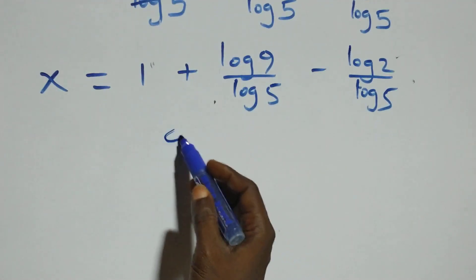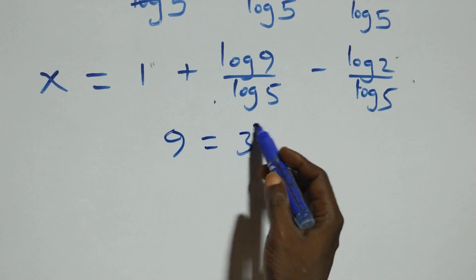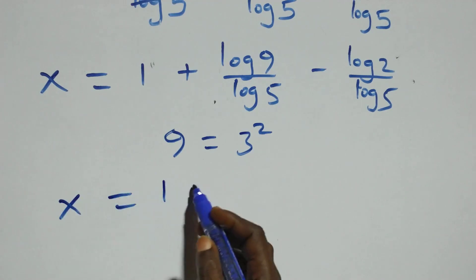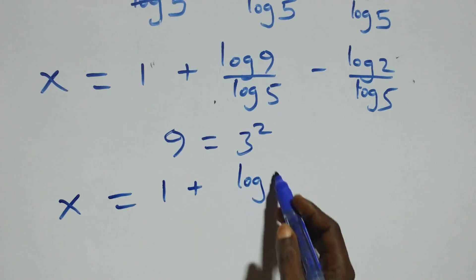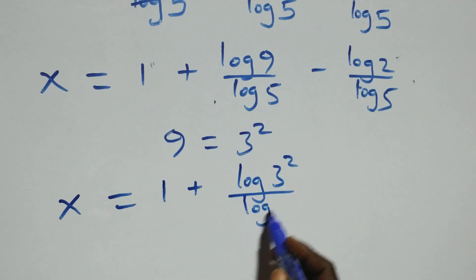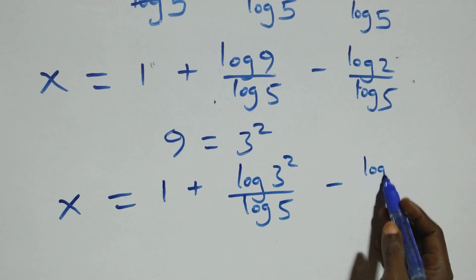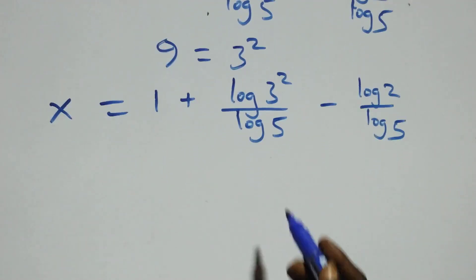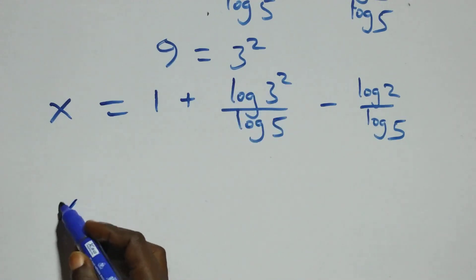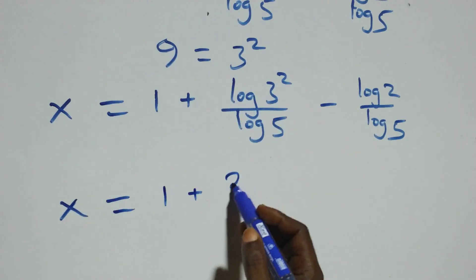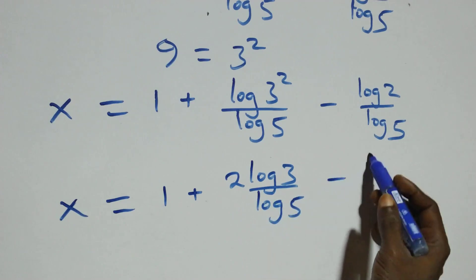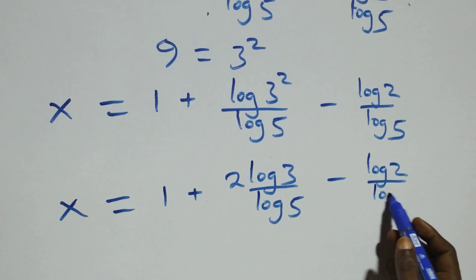From here we can express 9 as 3 times 3, which is 3 squared. So we have x equals 1 plus log(3 squared) over log 5 minus log 2 over log 5. Then we apply the power rule of logarithms: the 2 comes down, giving x equals 1 plus 2 log 3 over log 5 minus log 2 over log 5.